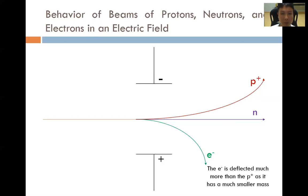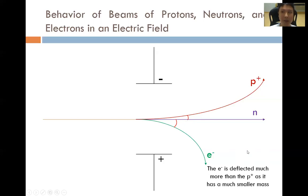Since the proton is much, much heavier than the mass of the electron, the angle of deflection for the proton will be much smaller than that of the angle of deflection for the electron. The electron is deflected much more than the proton because it has a smaller mass. This is the second key difference in the behaviour of beams of protons and electrons in an electric field.